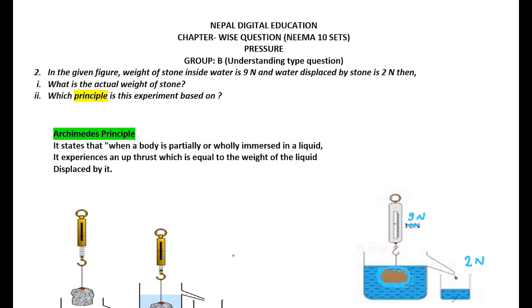Let us look at problem number two. In the given figure, the weight of a stone inside water is 9 Newton and the water displaced by the stone is 2 Newton. We need to find the actual weight of the stone and identify which principle this experiment is based on. This experiment is based on Archimedes' principle, which states that when a body is wholly or partially immersed in a liquid, it experiences an upthrust equal to the weight of liquid displaced by it.